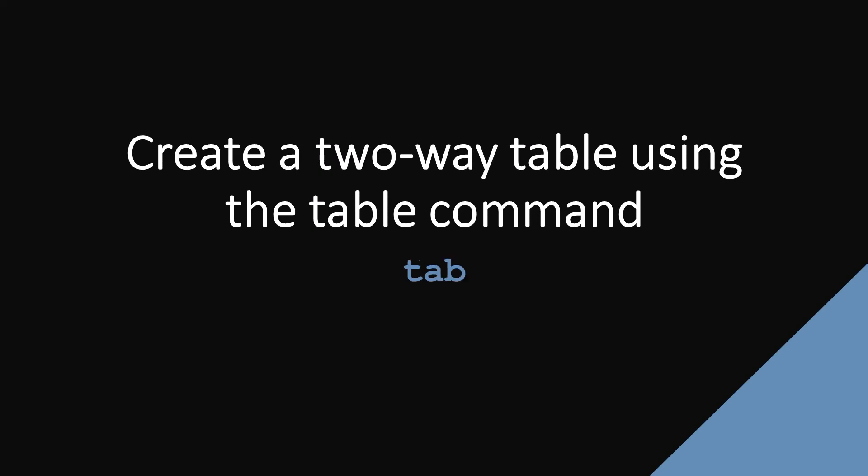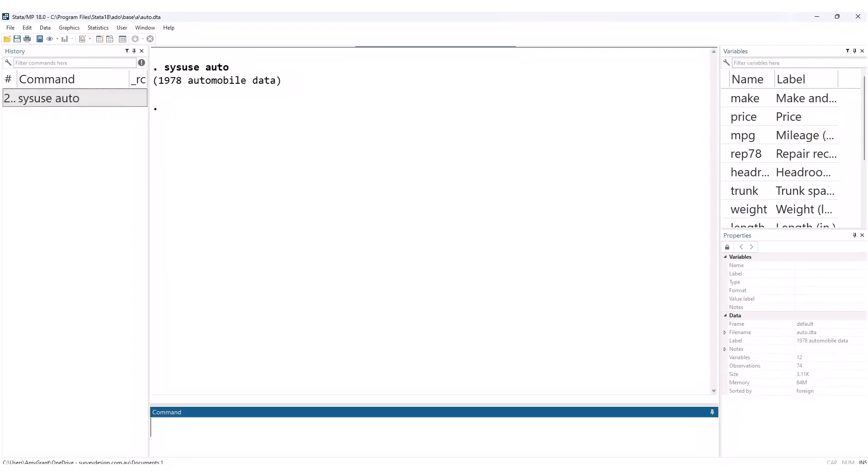In today's SDAS Tech Talk, we show you how to create a two-way table using the table command, which shows you the frequency of each possible combination of values of the variables. Let's see this in action. Use the table command followed by the name of the row variable, then the name of the column variable.